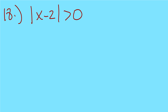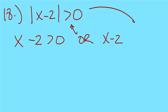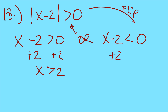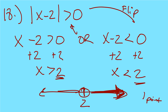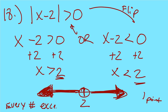Number 18: absolute value of x minus 2 is greater than 0 — it's an OR. Write it twice: x minus 2 greater than 0; second: x minus 2 less than 0. Note that you can't flip 0, but you still flip the inequality. Adding 2: x is greater than 2 and x is less than 2. Since both solutions share the same point, the number line has just one point — 2 — with an open circle, shaded left and right. This means every number except 2 will work.